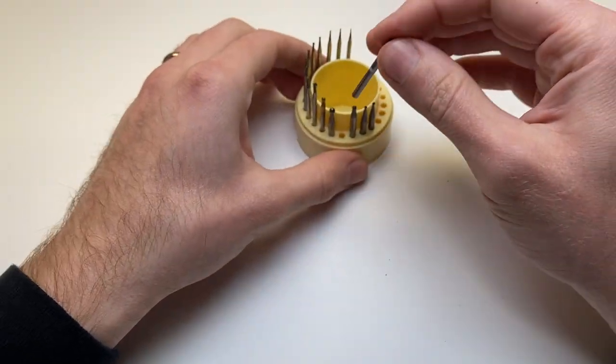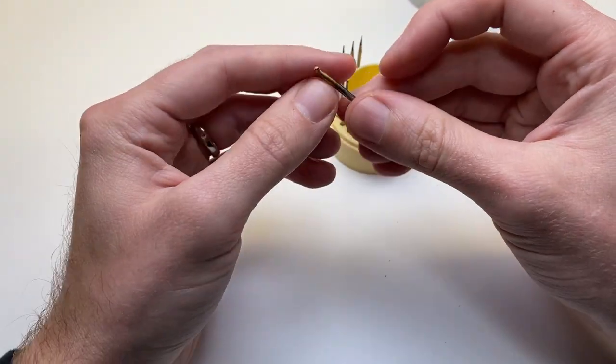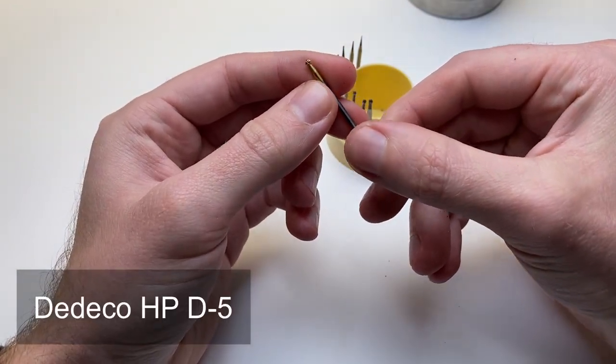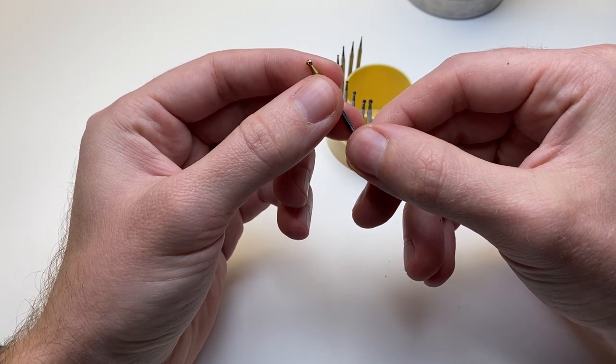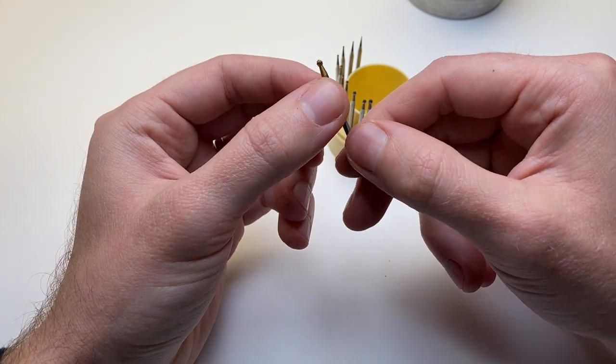Yeah I will definitely keep using tungsten carbide and they make different kinds. I just bought me this $25 burr. I haven't used it much but as you can see it's got a double cut ball and yeah it cuts amazing.